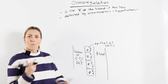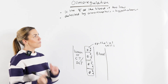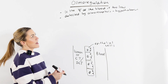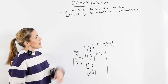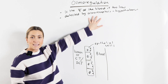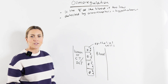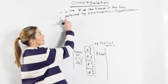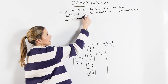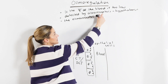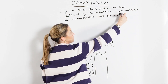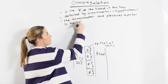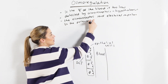Osmoreceptors monitor the water potential of your blood, and in this scenario we're going to talk about what happens if they detect that the water potential of the blood is too low. These osmoreceptors are receptors, but they're actually sensory neurons. When they detect the water potential of the blood as being too low, the osmoreceptors send electrical impulses or action potentials to the posterior pituitary gland.